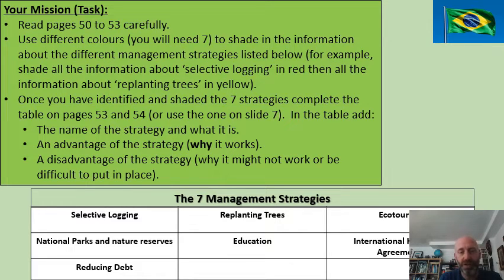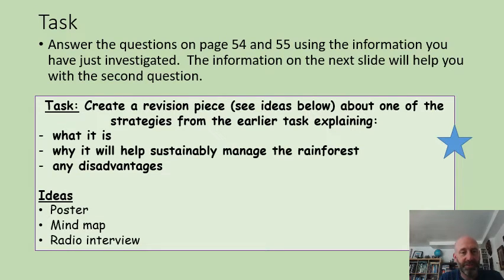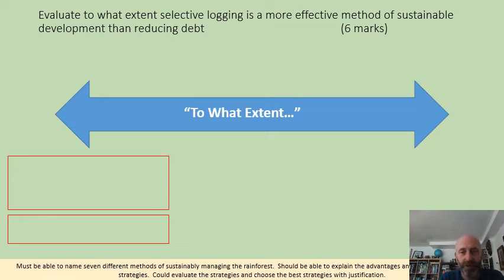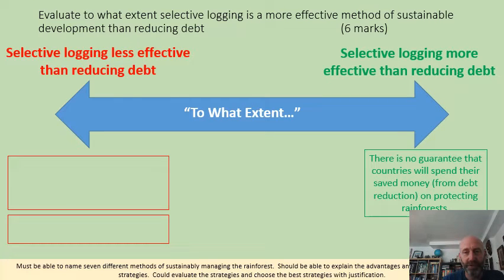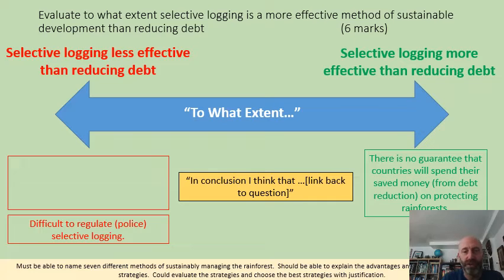For each strategy: describe it briefly, give an advantage, and give a disadvantage. Once you've done that, you should be able to answer the two questions on pages 54 and 55. The question on page 55 is one of those 'to what extent' questions — it's a six-mark question, so you'll need two paragraphs and a concluding sentence. You're weighing up: is selective logging more effective than reducing debt? Think about the benefits of selective logging in one paragraph, then consider the negatives — weighing up those two different strategies for sustainable management of the rainforest. You can use the slide to help.